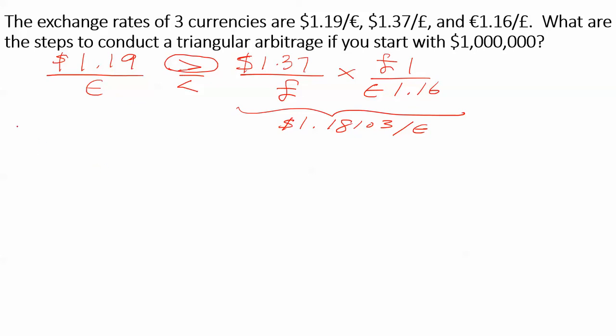We want to use the old principle of buy low, sell high. So we ask ourselves, would we rather buy euros at $1.19 or would we rather buy euros at $1.18? Well, of course we'd rather buy euros at $1.18. So let's buy euros with our million dollars through the pound first.